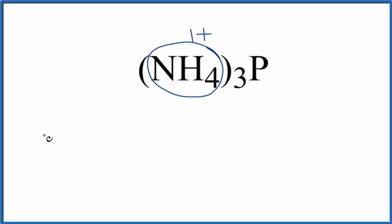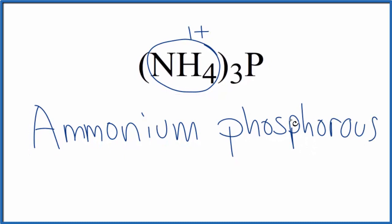So let's write ammonium for NH4, and then for the phosphorus, we're just going to write phosphorus. But since it's the second element here, I'm going to cross all of this out and then write IDE.